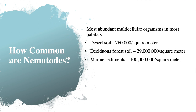How common are nematodes in the environment? They can be found just about everywhere, even blowing in the wind in a dried and arrested state called anhydrobiosis. But they are most abundant in soils and sediments, with the record being ocean sediments with more than 100 million individuals per square meter. Even in relatively depauperate soils like a desert, there can be three quarters of a million nematodes per square meter — truly a remarkable number.